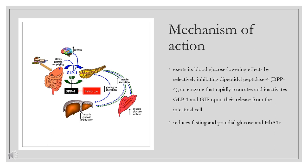Mechanism of Action: Alogliptin inhibits dipeptidyl peptidase-4 (DPP-4), which normally degrades the incretins glucose-dependent insulinotropic polypeptide (GIP) and glucagon-like peptide-1 (GLP-1). The inhibition of DPP-4 increases the amount of active plasma incretins, which helps with glycemic control. GIP and GLP-1 stimulate glucose-dependent secretion of insulin in pancreatic beta cells.